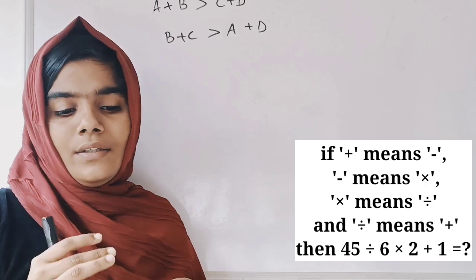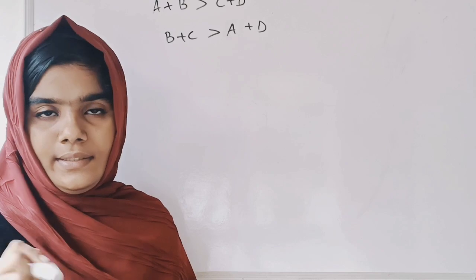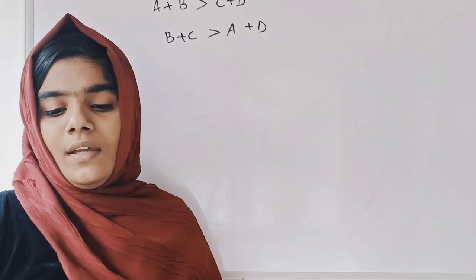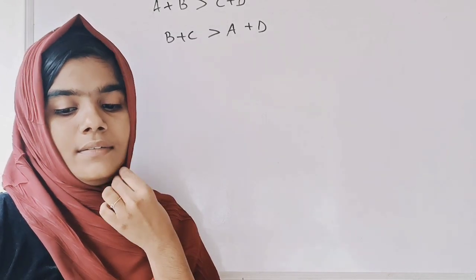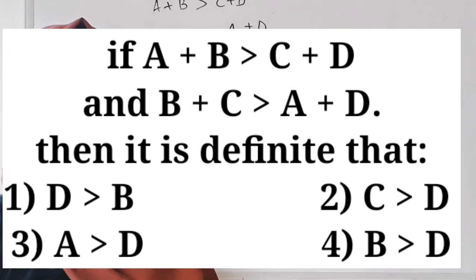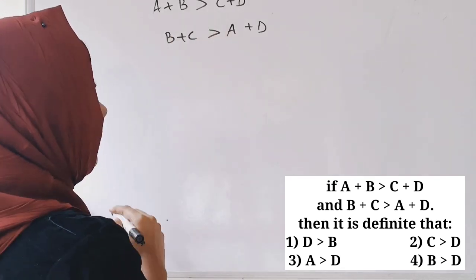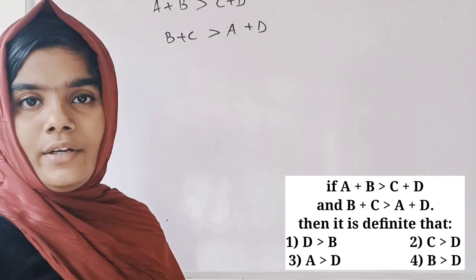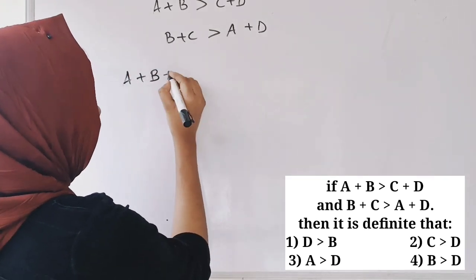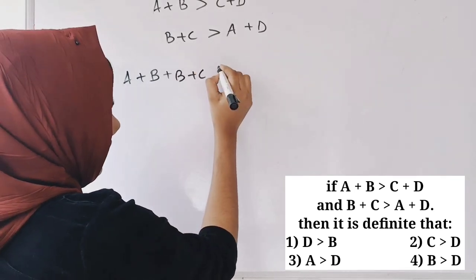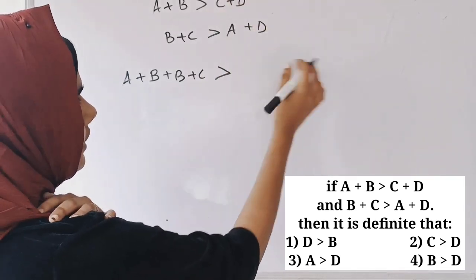Now this is the topic of deriving conclusions. We are given that B plus C is greater than A plus D. There are 4 options. We need to determine which conclusion follows. A plus B is greater than C plus D, and B plus C is greater than A plus D — one side is greater and the other is lower.